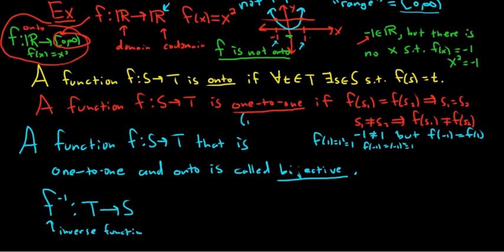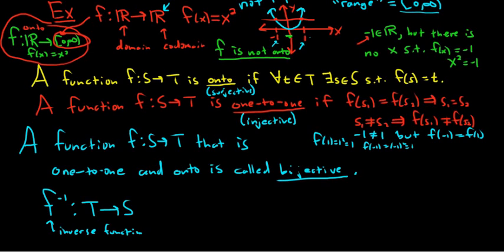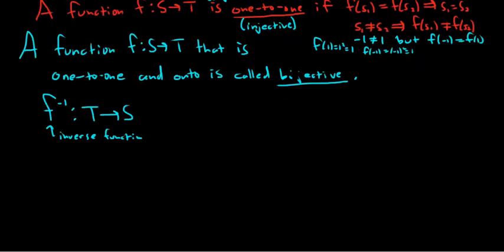Extra knowledge: another way to say one-to-one is injective, and another way to say onto is surjective. There's a lot of information in this video — I'm defining a bunch of stuff and giving a few examples, trying to give you as much information as I can.